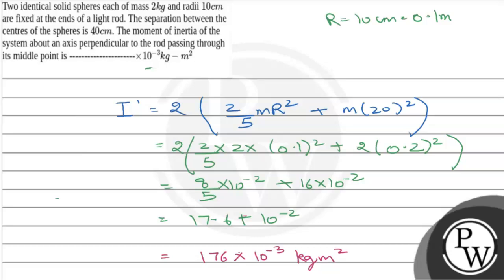The final answer is: the moment of inertia of the system is 17.6 multiplied by 10 to the power minus 3 kg m squared. Hope you understood it well — best of luck. Thank you.